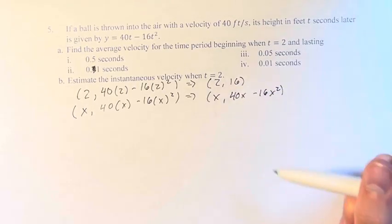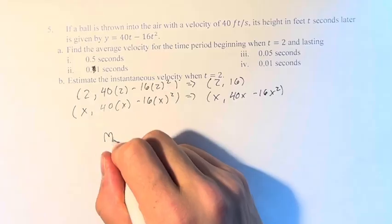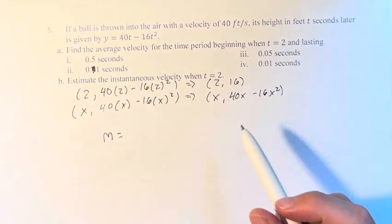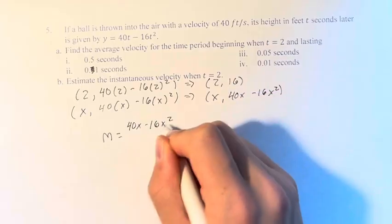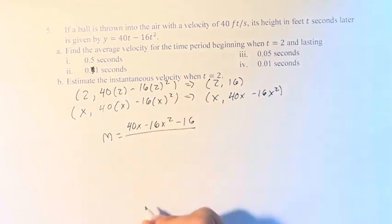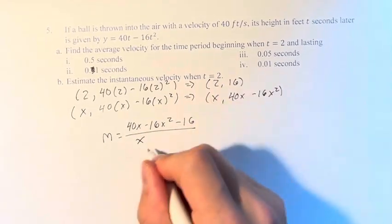These are the two points, so we have to find the slope between them, which is going to be the change in y. So that'll be 40x minus 16x squared minus 16 over x minus 2.